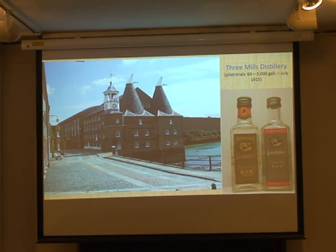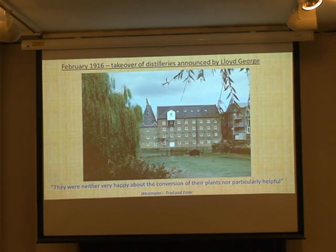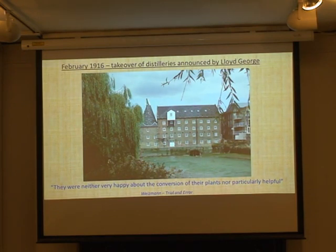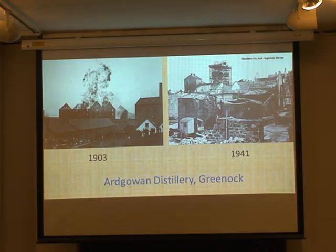They were very impressed by it. They needed acetone so badly that Lloyd George convened a meeting in February 1916 where there were representatives of the distillers company, Watney's distillery in South London, and so on. He said they were going to take over all the distilleries for producing acetone, by which most of them went apoplectic and objected. As Weizmann wrote in his autobiography: 'they were neither very happy about the conversion of their plants, nor particularly helpful.' But nonetheless it went through, though they didn't actually take over many distilleries.